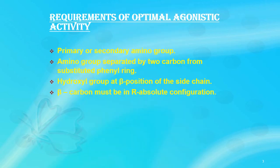By carefully examining all the drug structures, we can generate the general requirements for optimal agonistic activity. First, a primary or secondary amino group is required. Each and every drug has a terminal primary or secondary amino group. Second, the amino group must be separated by two carbons from the substituted phenyl ring. Third, there must be a hydroxyl group at the beta position of the side chain, and the beta carbon must be in R absolute configuration.